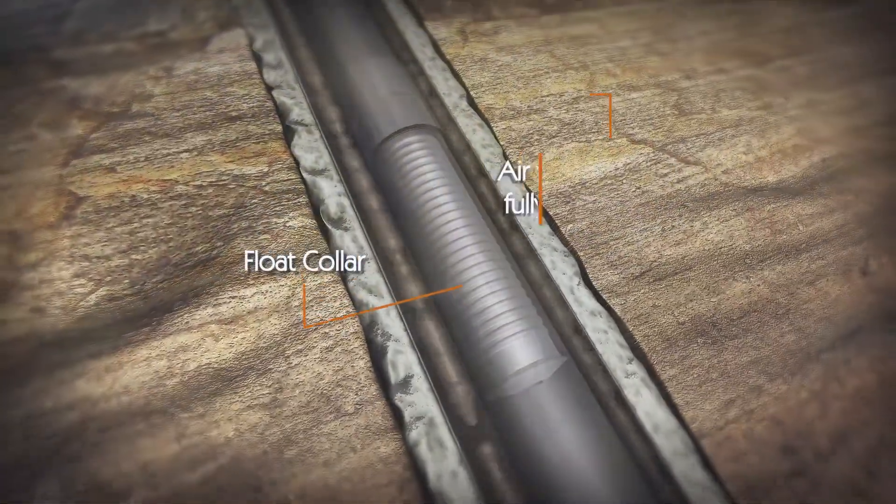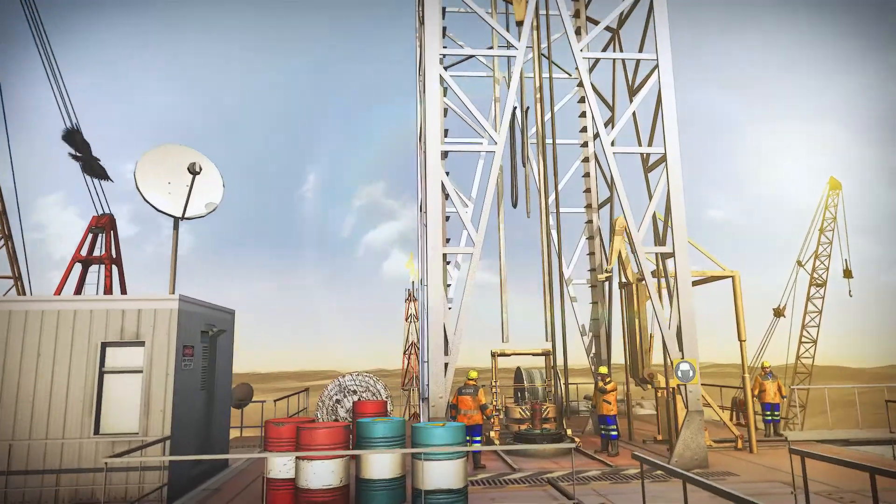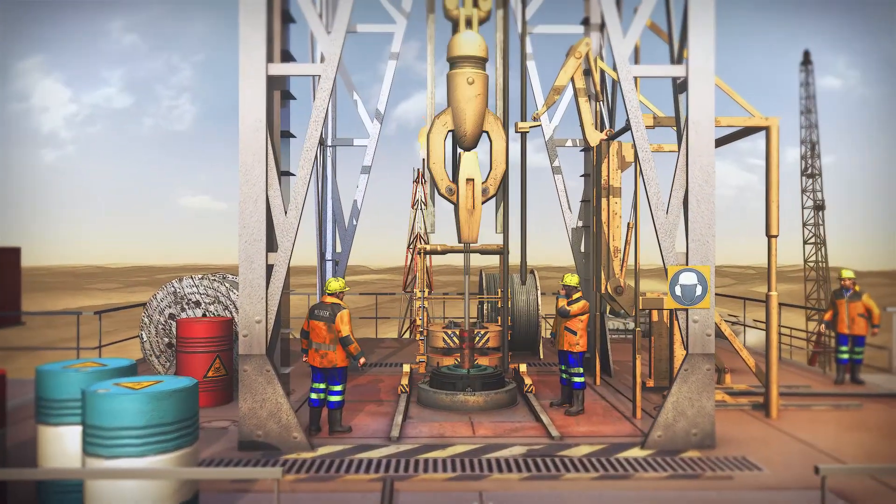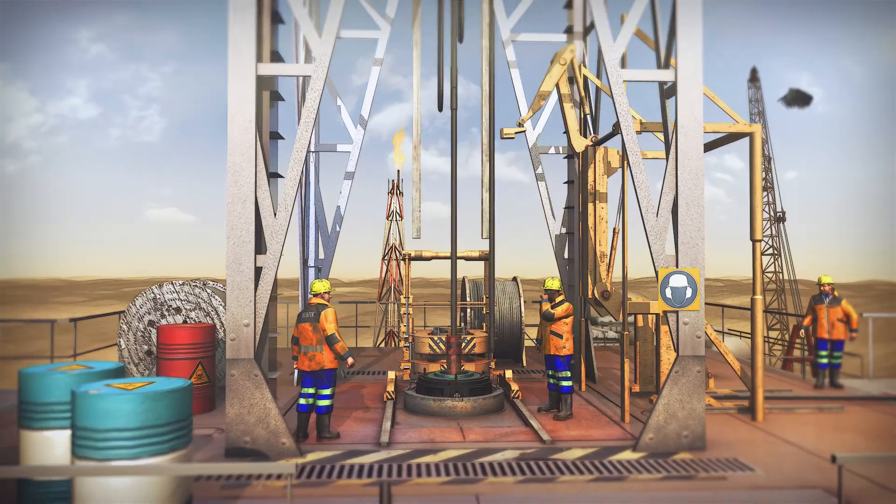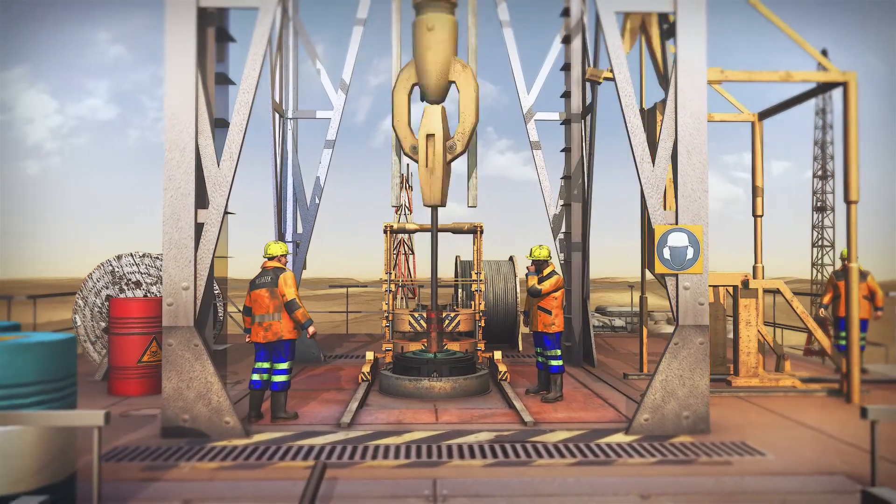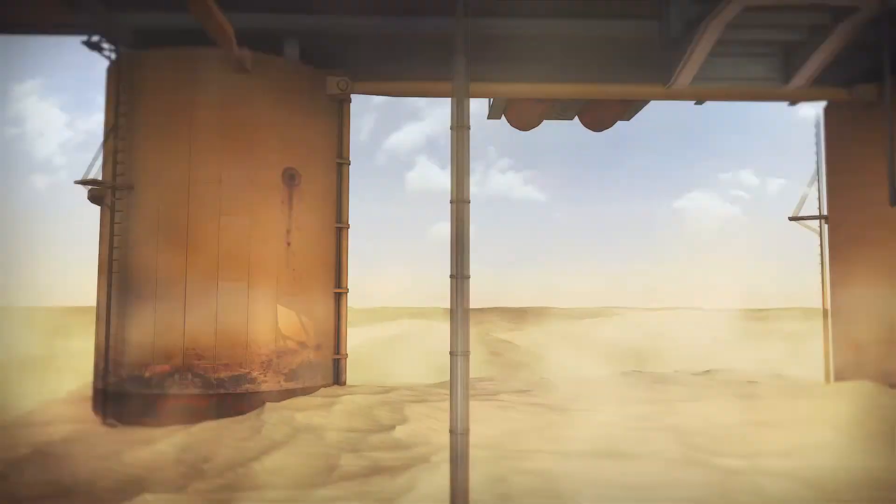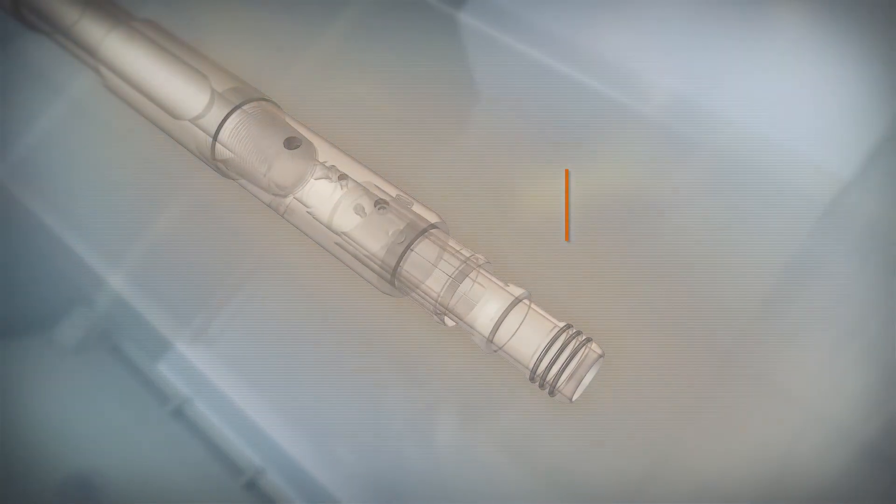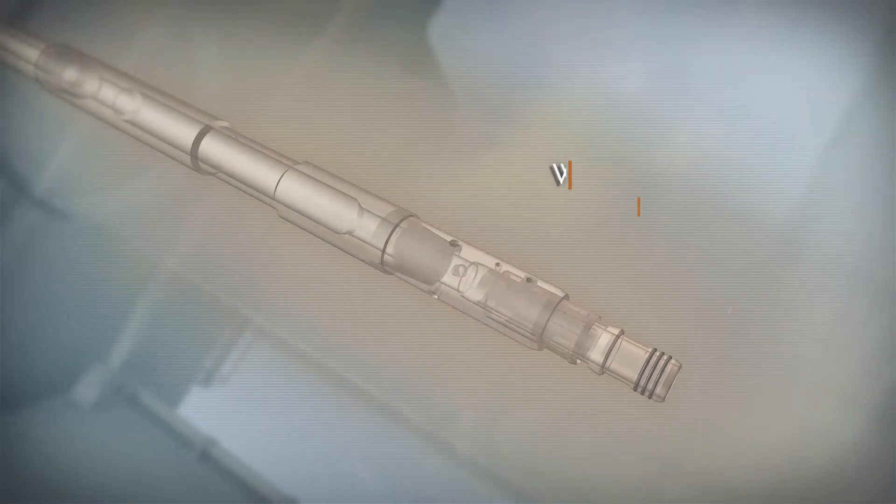Critically, the liner is run either entirely or partially dry to provide buoyancy for the system. The C-Cure assembly complete with slip joint tool, weight set sub and latching adapter is run into the dry liner, complete with rupture discs pre-installed.